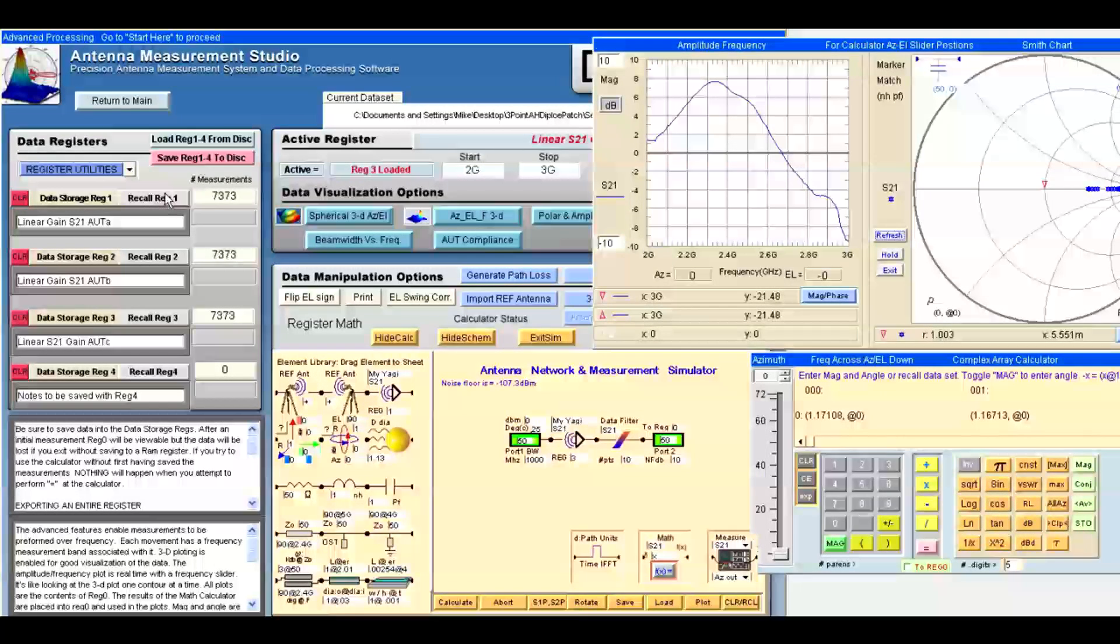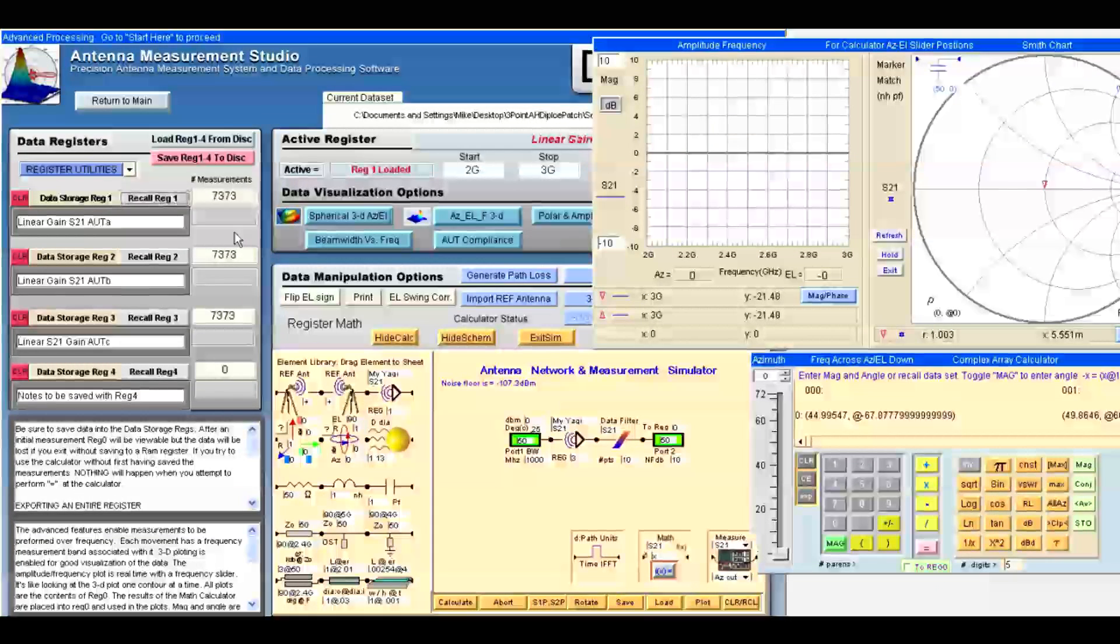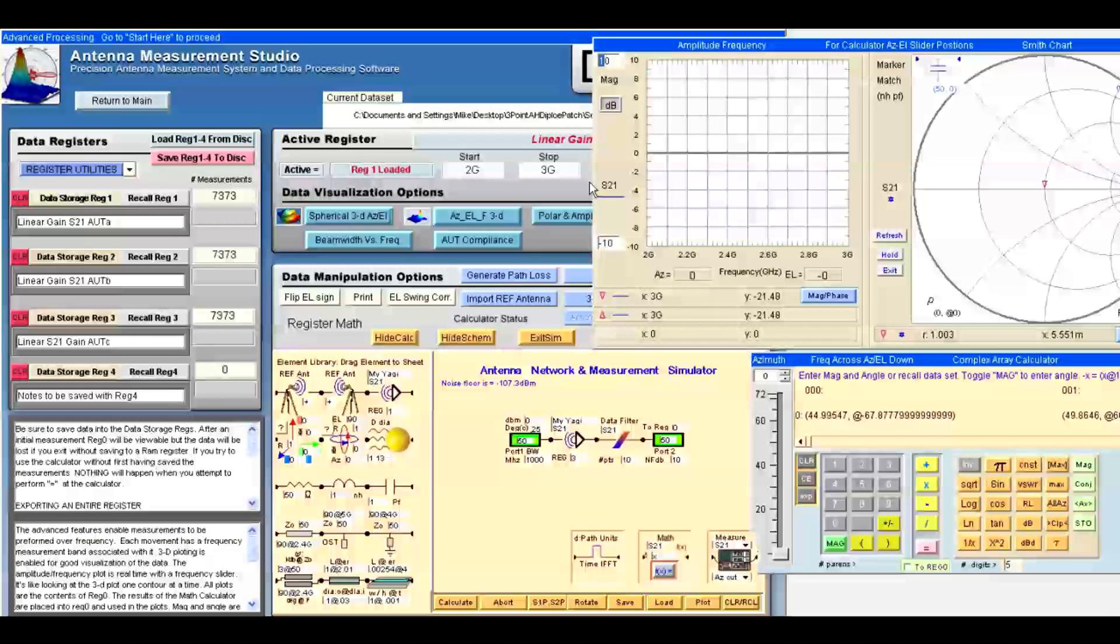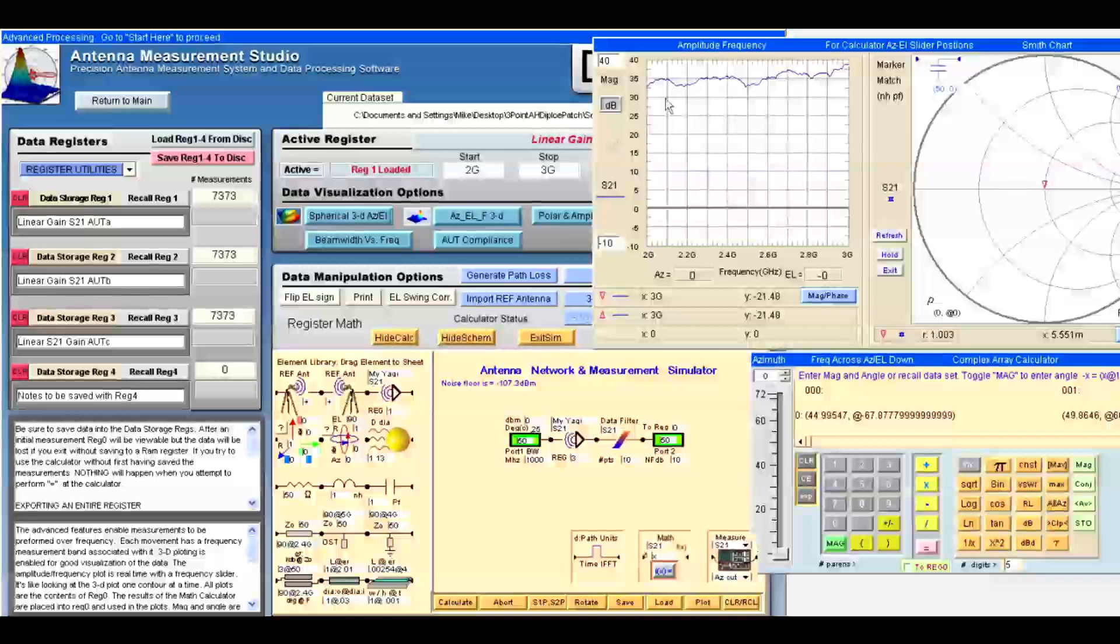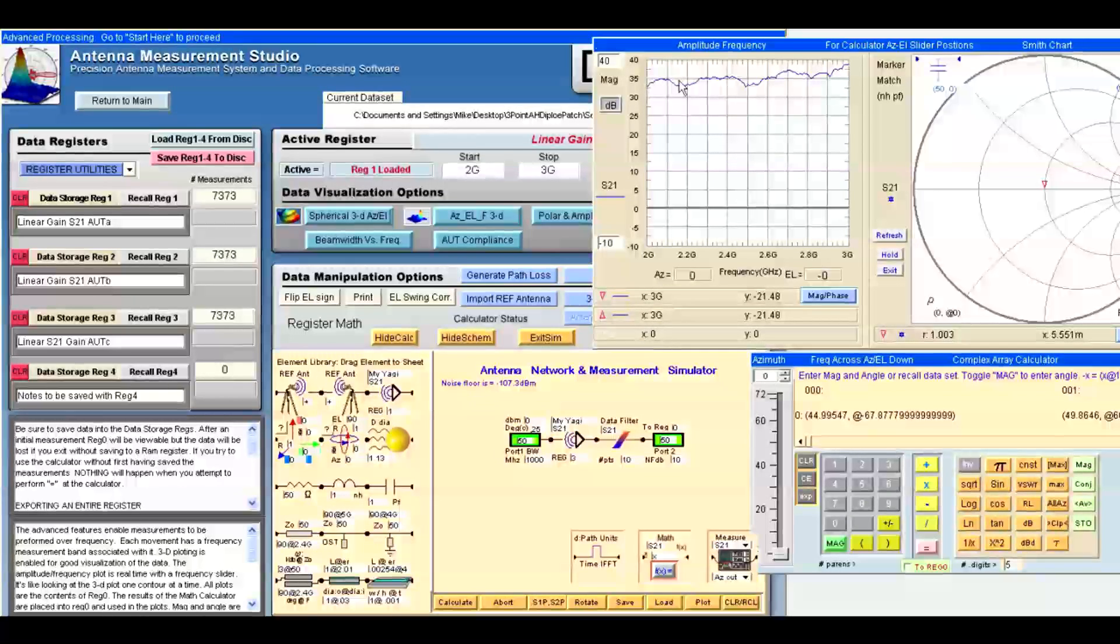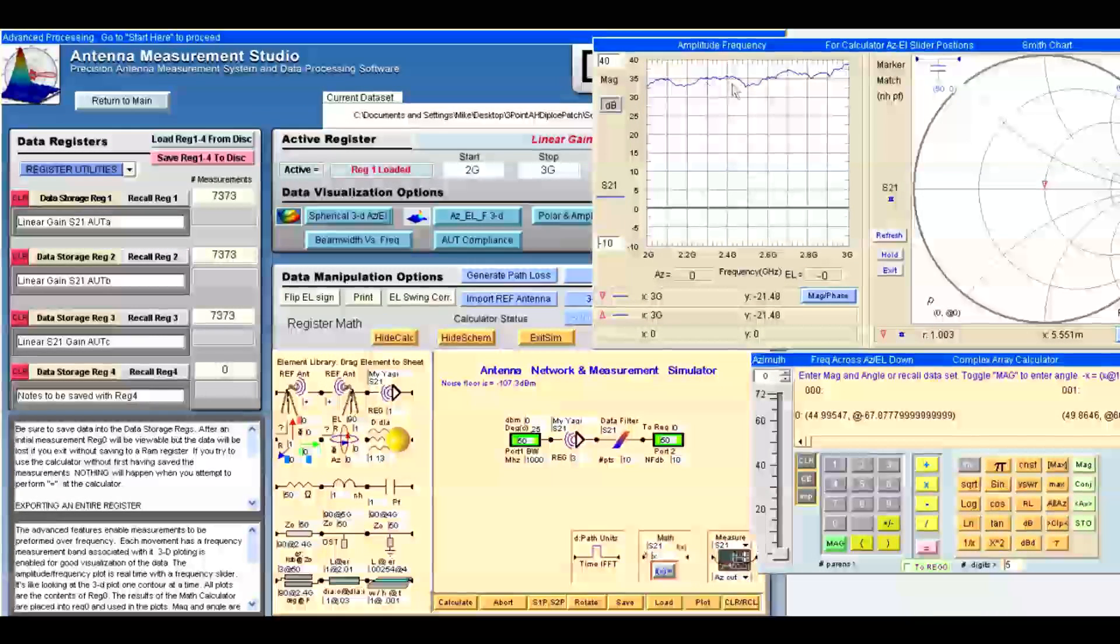Next, let's recall the reference horn or AUT A data. In order to view the profile, we must first change the scale of the graph to 40 dB since this data represents the horn data and the amplifier data.